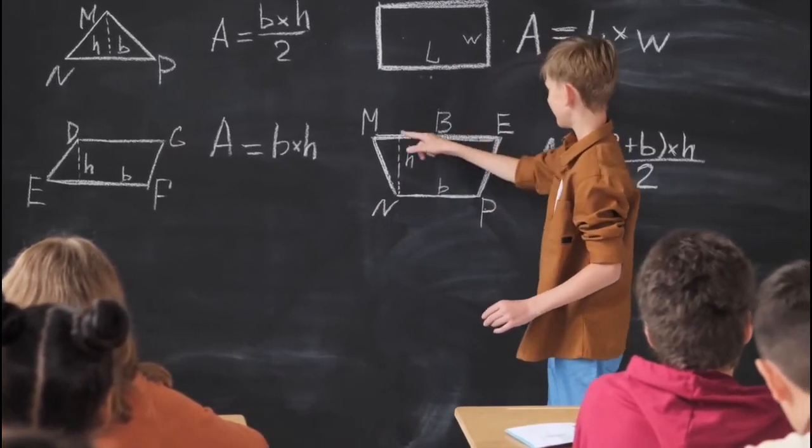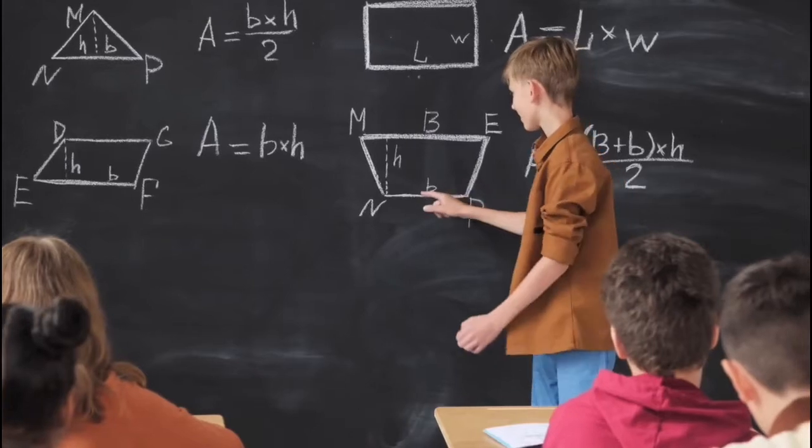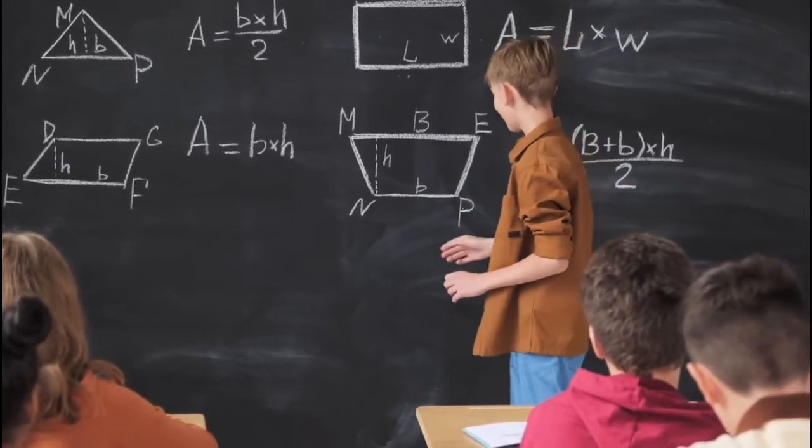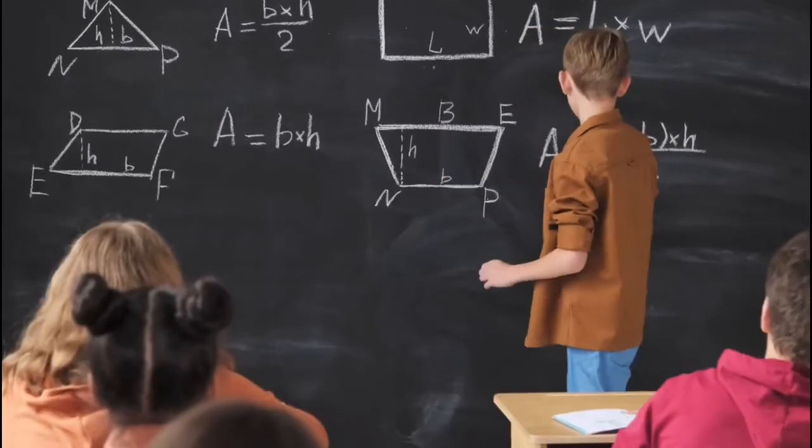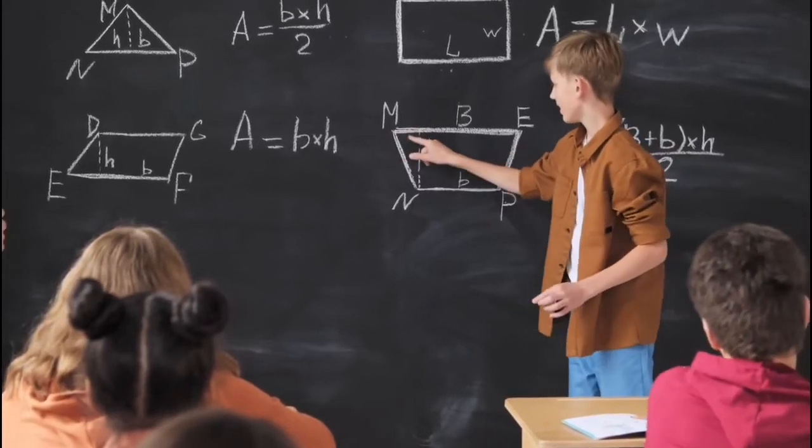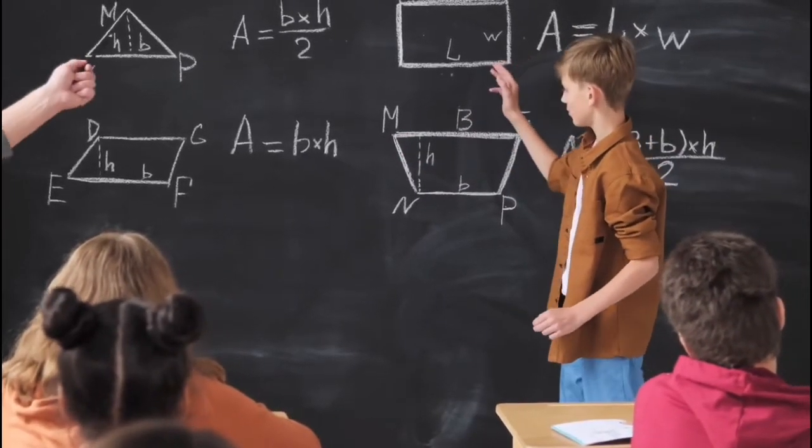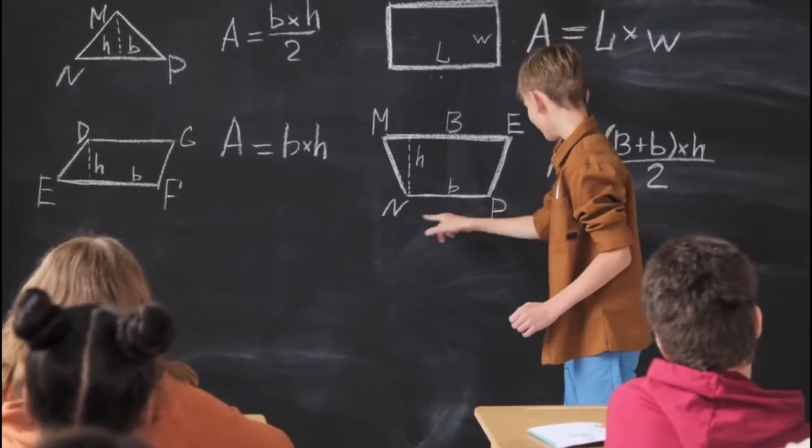On this same tack, you could take the barometer to the top of the building, attach a long rope to it, lower it to just above the street, and then swing it as a pendulum. You could then calculate the height of the building by the period of the precession.